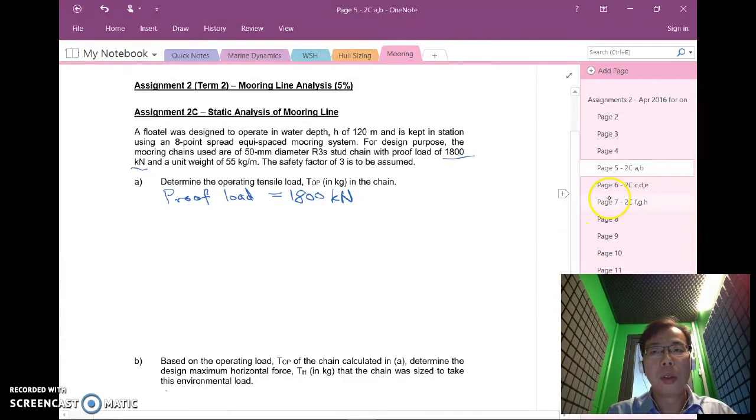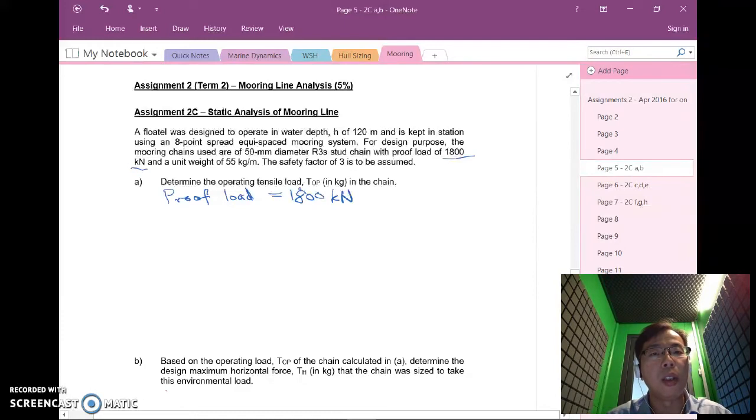Let's come back to A again, a proof load of 1800 kilonewtons. How do we get the operating tensile load? The operating load would actually take into account the safety factor indicated here.